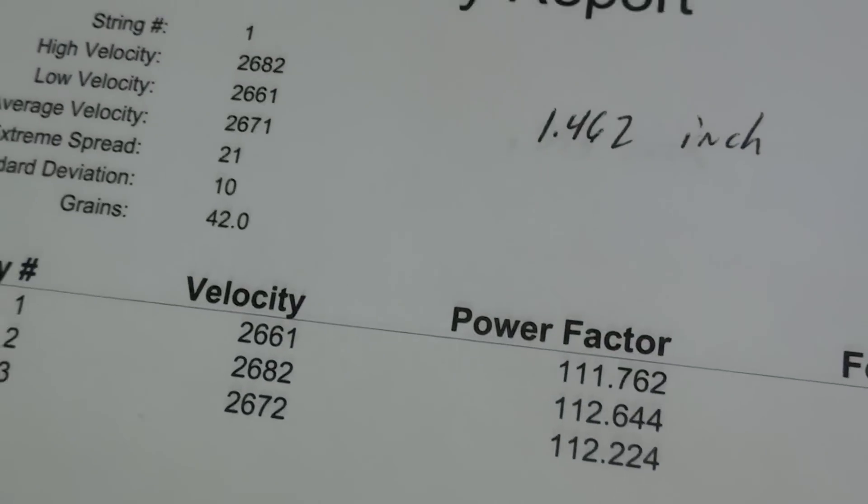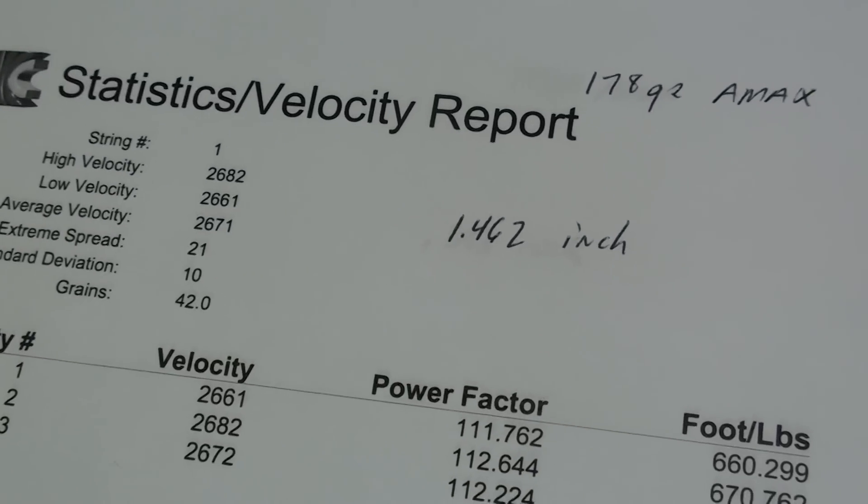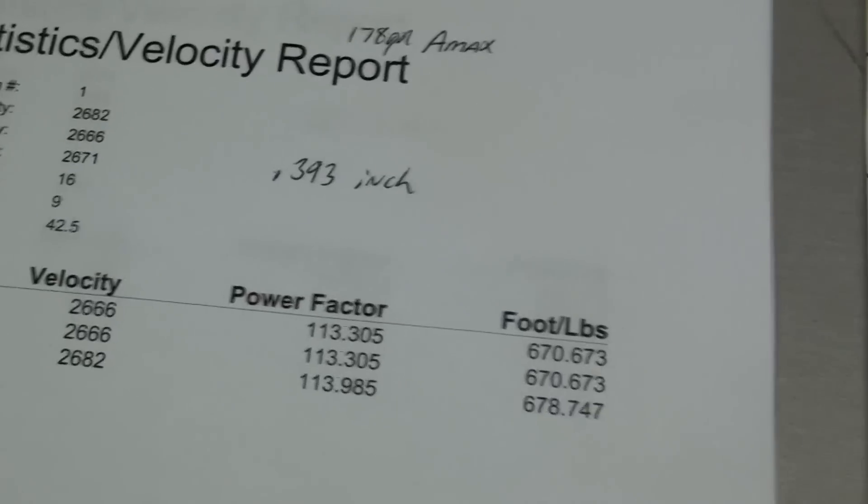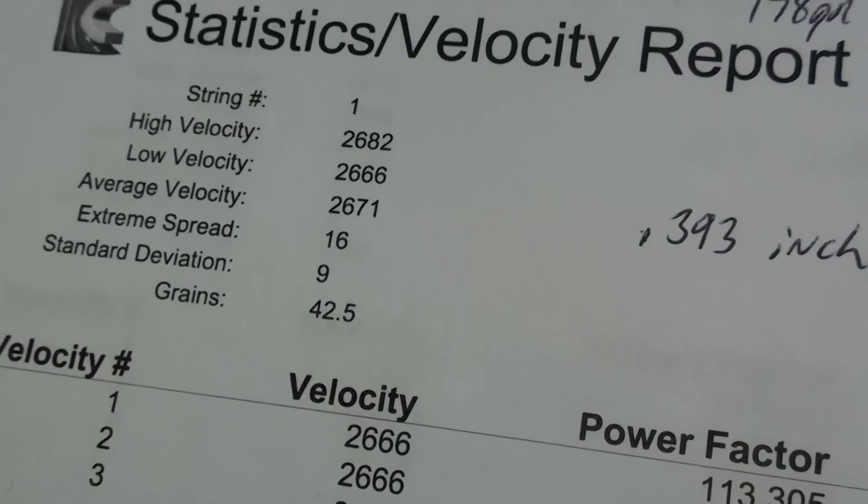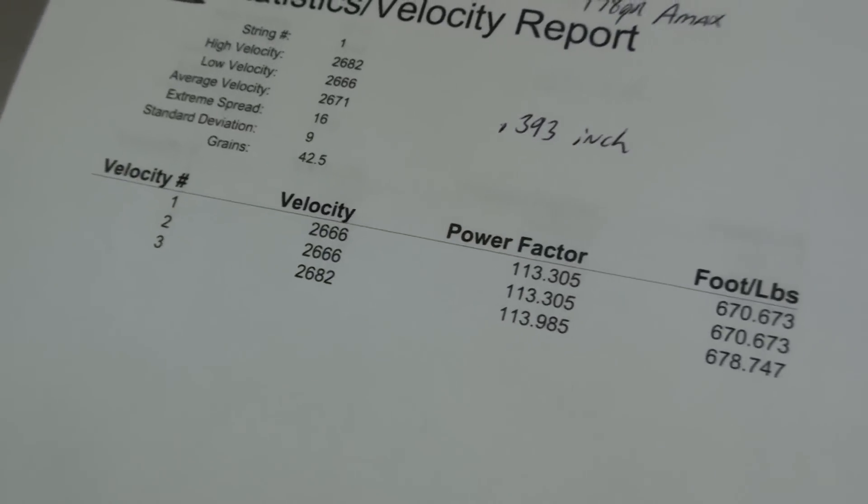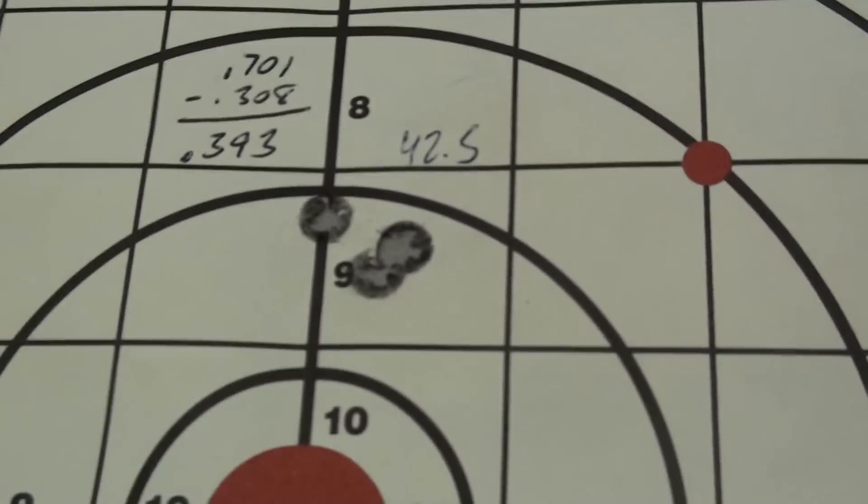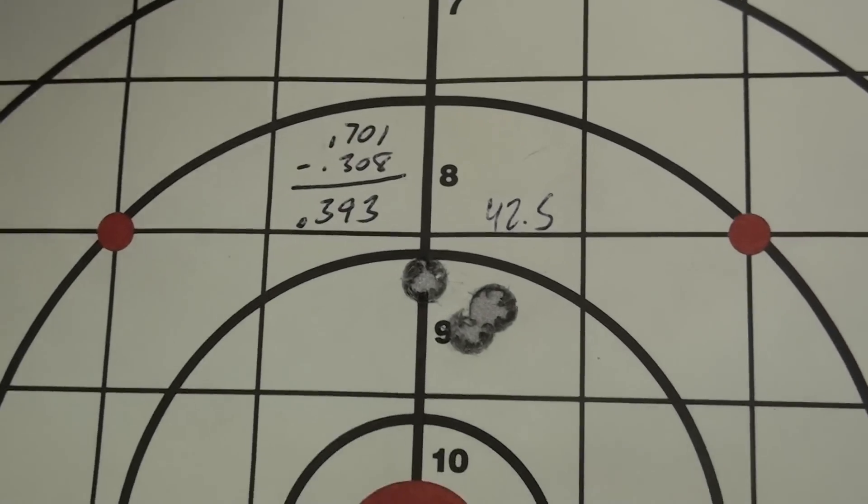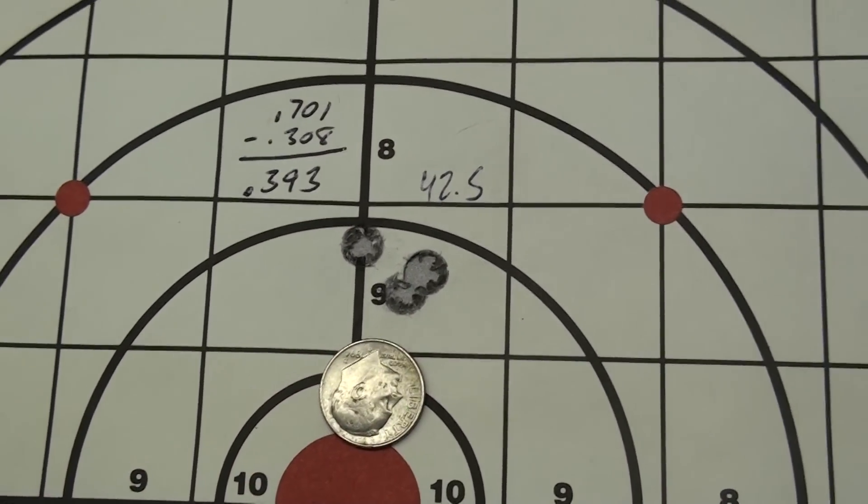42.5 was probably the best group I got and you can see the extreme spread and standard deviation is pretty close to single digits. There we go, so that's 42.5 of Varget. That one's probably the smallest group I did that day.